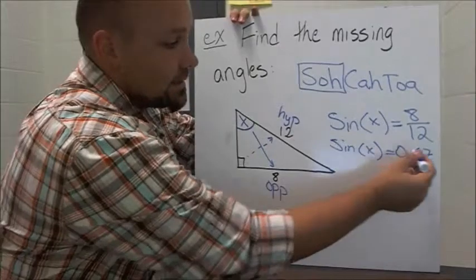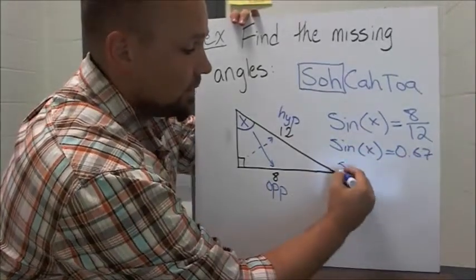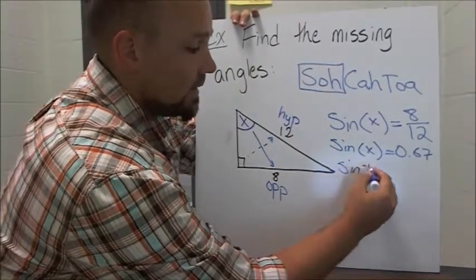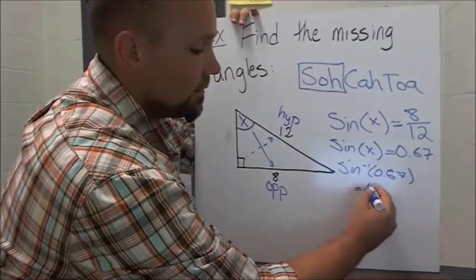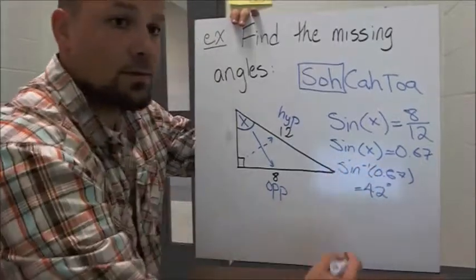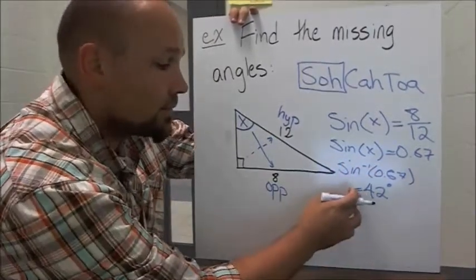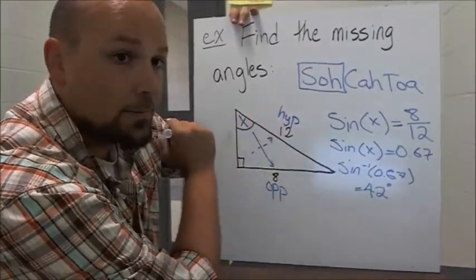So I've got sine x is 0.67, so what we put into the calculator is sine inverse 0.67, and that ended up being 42 degrees. So our answer is 42 degrees for that angle.